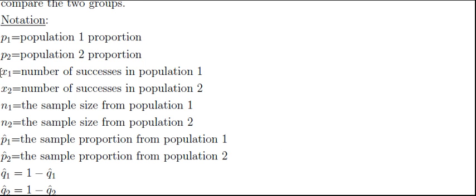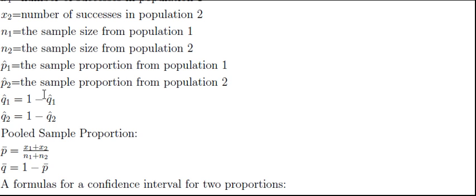And so you should be used to this notation. We just have it now for two groups. We have the number of successes for both groups and the sample size. That's how we calculate the proportion. So we can get the sample proportion for each group by just taking x1 divided by n1 or x2 divided by n2. That's a typo.